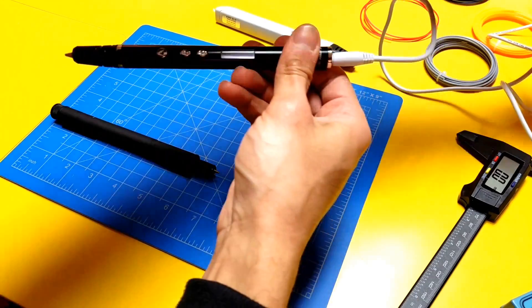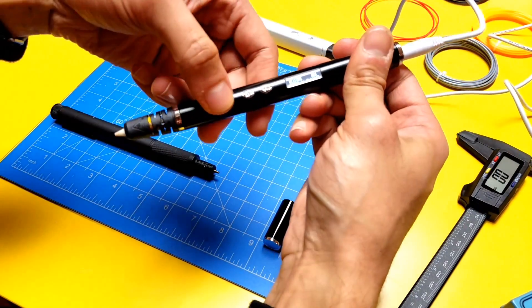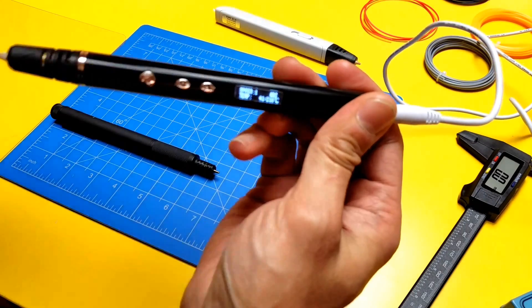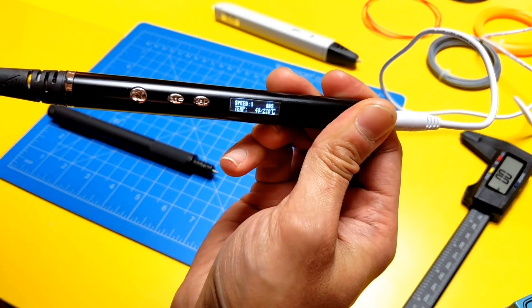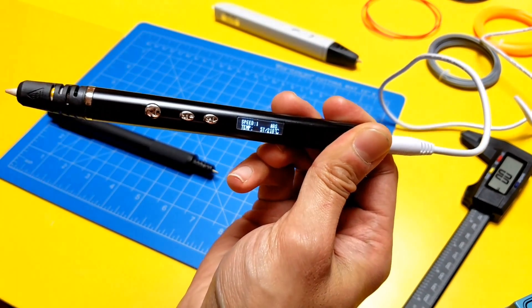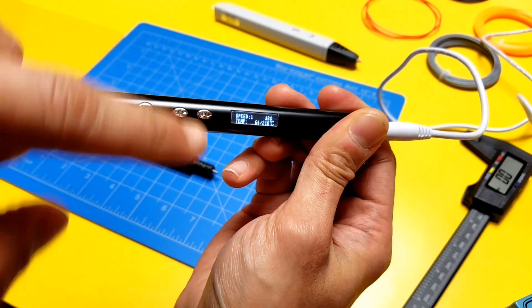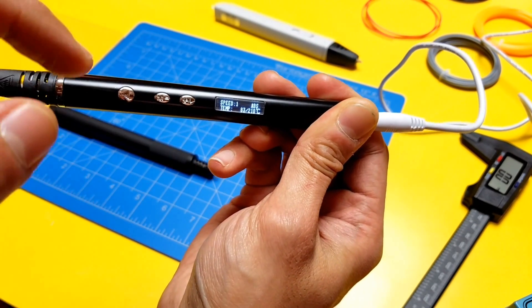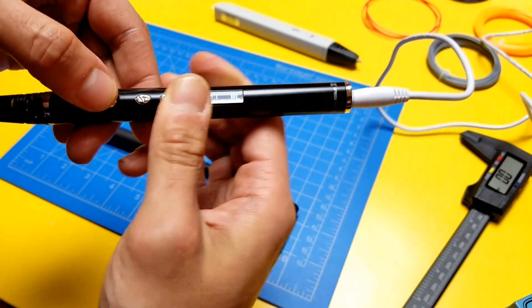Let me plug it in here so I can show you some of the features of this pen. When you press this button, it has a very beautiful OLED screen right there. What I like about it is it displays the current temperature, the target temperature, material that the temperature is set for, and the speed.